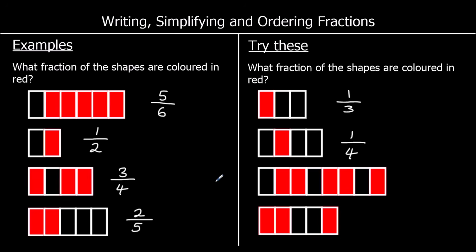For the next one, there are eight parts and five are red. So five out of eight — we write that as five over eight or five eighths.